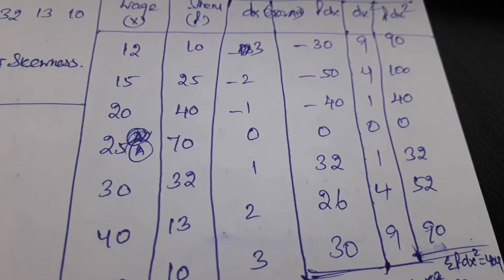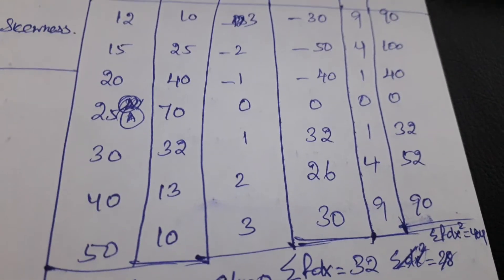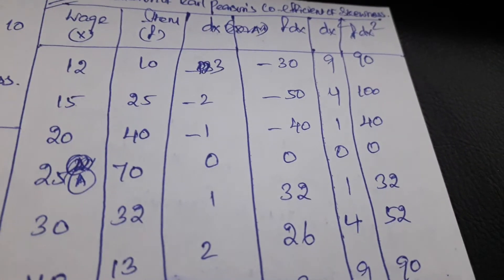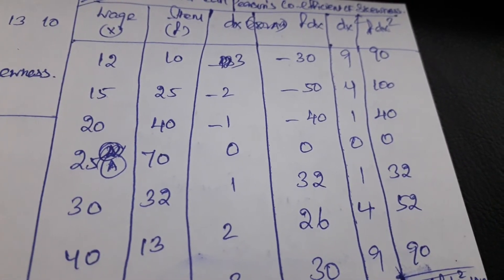Minus 1, minus 2, minus 3. The upper values 1 to 3, the below values. The summation of dx is equal to 0.